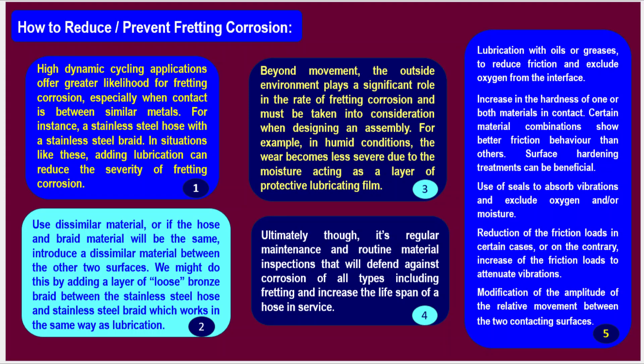High dynamic cycling applications offer greater likelihood for fretting corrosion, especially when contact is between similar metals — for instance, a stainless steel hose with a stainless steel braid. In such situations, adding lubrication can reduce the severity of fretting corrosion. Use dissimilar materials, or if the hose and braid material will be the same, introduce a dissimilar material between the two surfaces — for example, adding a layer of loose bronze braid between the stainless steel hose and stainless steel braid, which works in the same way as lubrication.